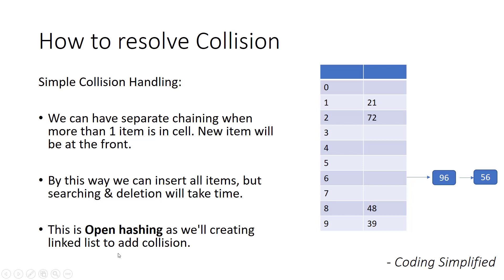This approach is known as open hashing, because we are creating a linked list to handle collisions outside the hash table — the linked list is extra, outside the hash table. The problem with this approach is that while we can insert all items, searching and deletion will take time. To search for 56, you first use the hash function, then apply a linear search through the linked list — which is O(n) — so there are two steps, which is the basic problem.